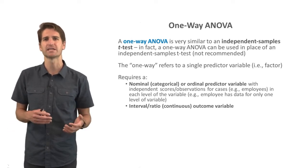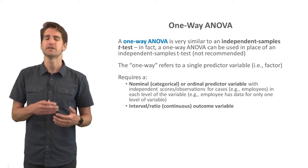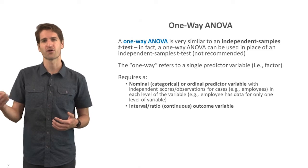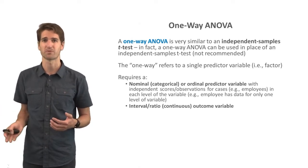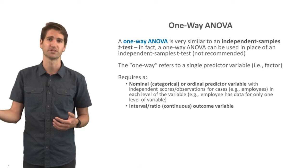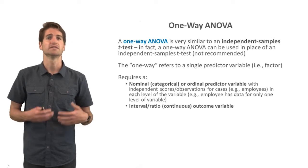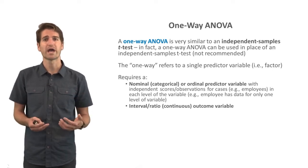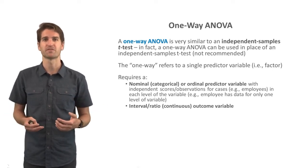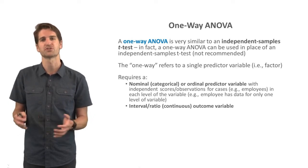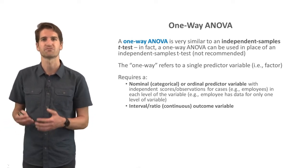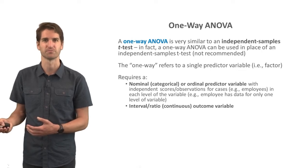I would liken it to going to the corner store in your Ferrari to pick up a bottle of milk when instead you could just walk around the corner on foot. Now, the "one-way" in one-way ANOVA refers to the fact that it has a single predictor variable, which is sometimes referred to as a factor or factor variable.